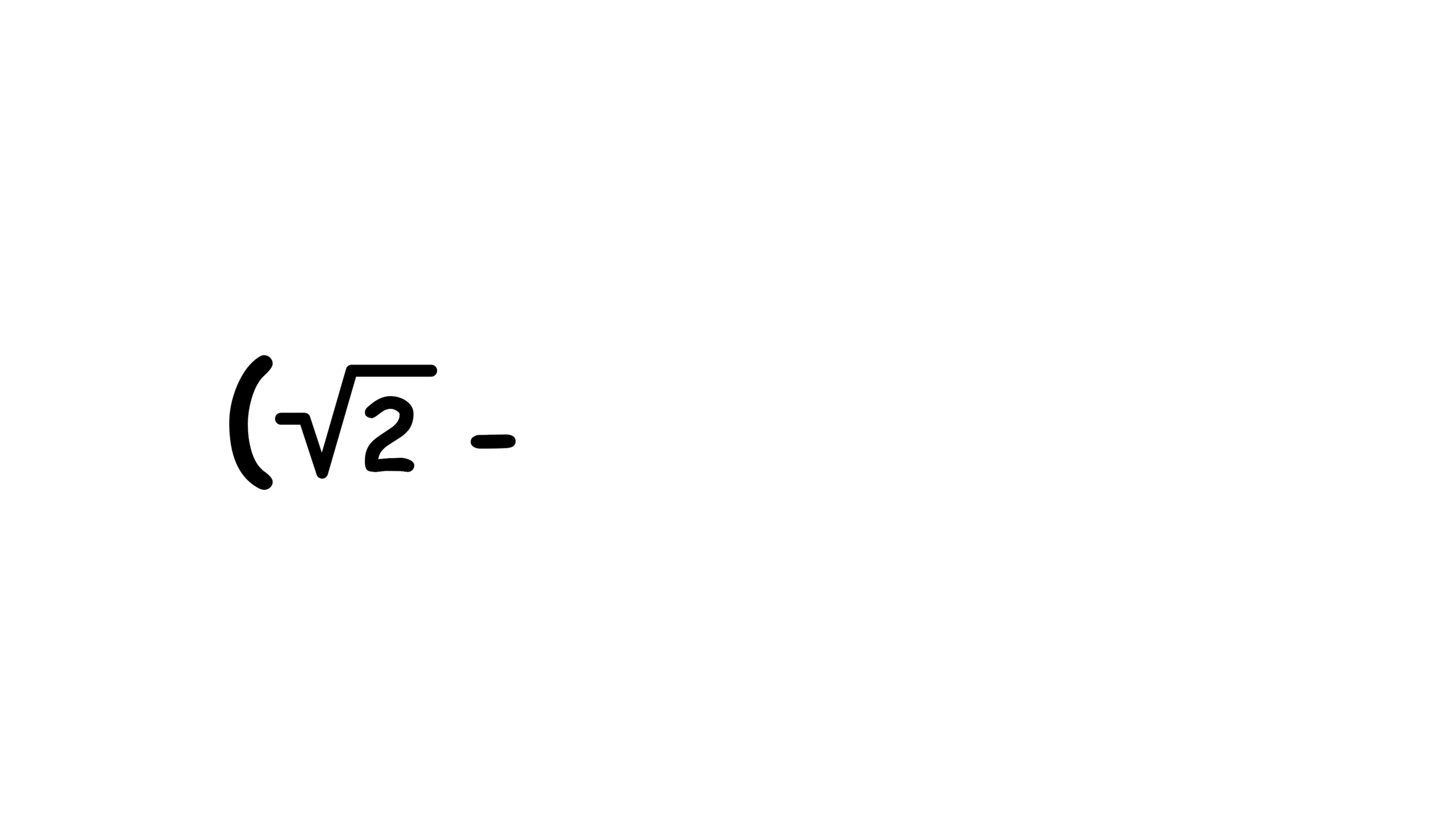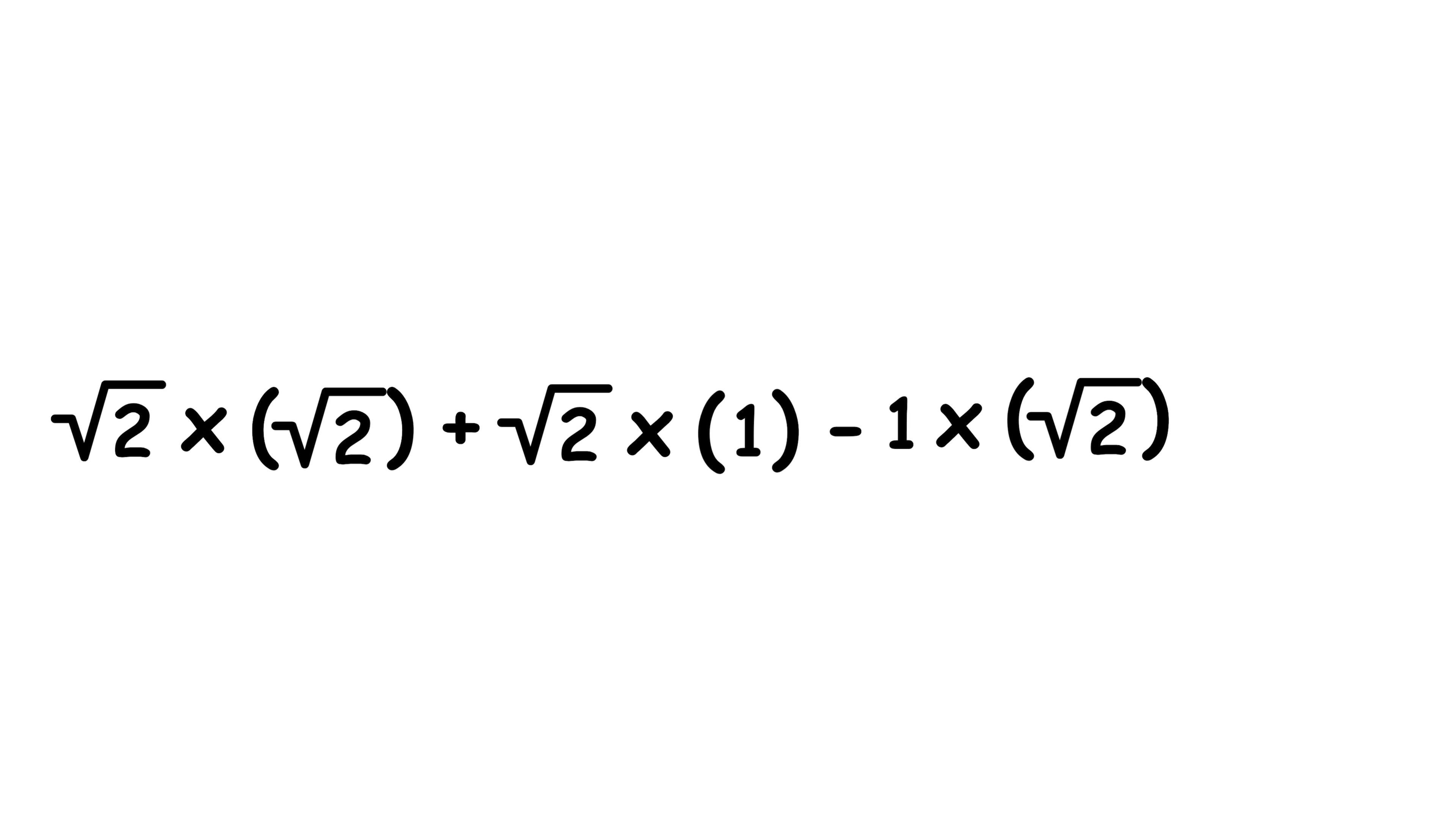Next, we'll consider the expression quantity square root 2 minus 1 times quantity square root 2 plus 1. To evaluate this, we can distribute twice. Quantity square root 2 minus 1 times quantity square root 2 plus 1 equals square root 2 times quantity square root 2 plus 1 minus 1 times quantity square root 2 plus 1, equals square root 2 times square root 2 plus square root 2 times 1 minus 1 times square root 2 minus 1 times 1.